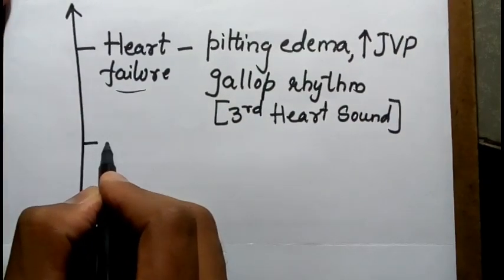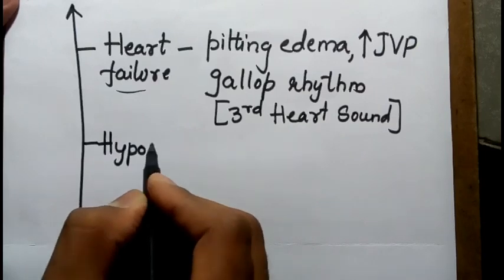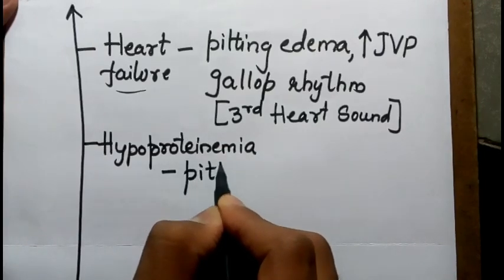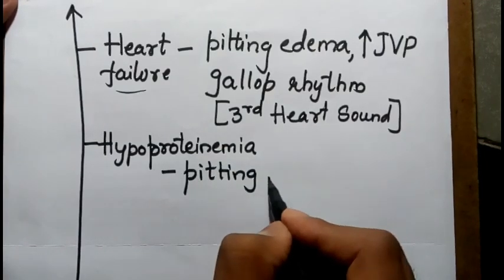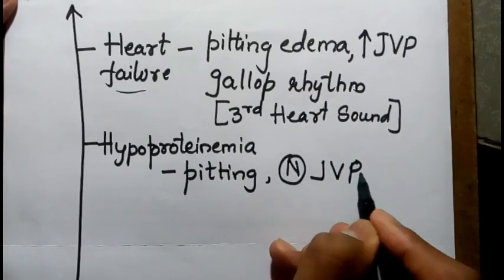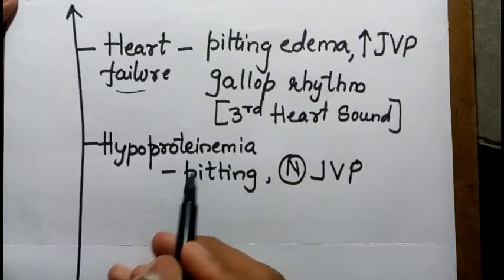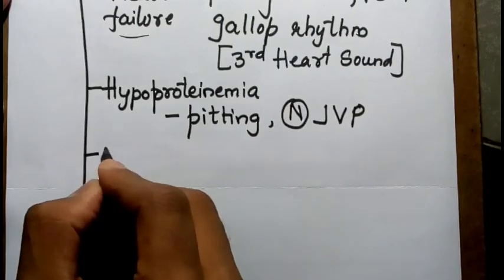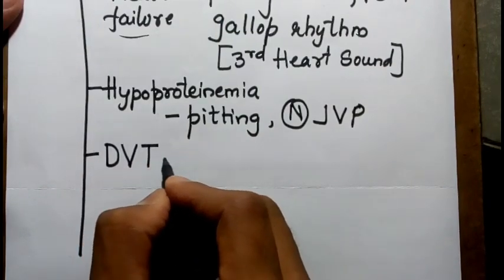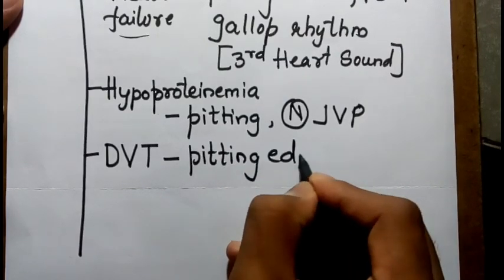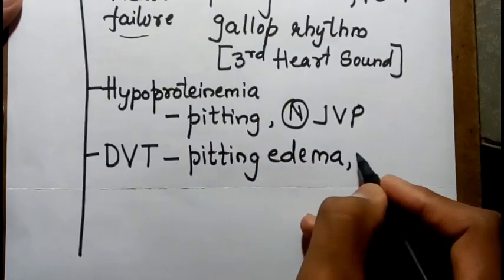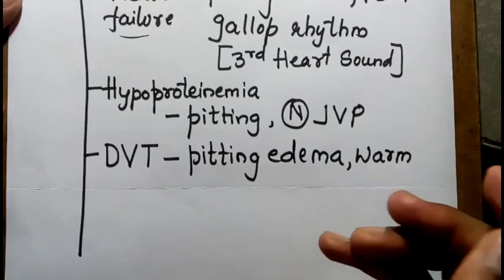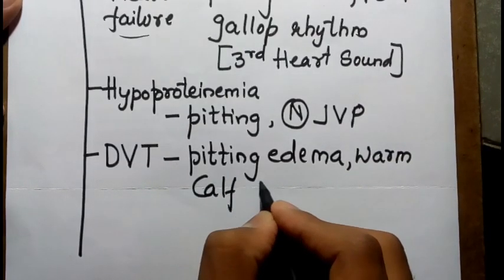In hypoproteinemia, we see pitting edema with normal jugular venous pressure. In deep venous thrombosis, we find pitting edema with a local rise of temperature, warmth, and calf tenderness.